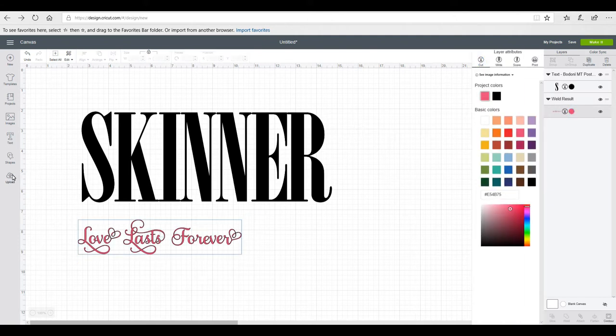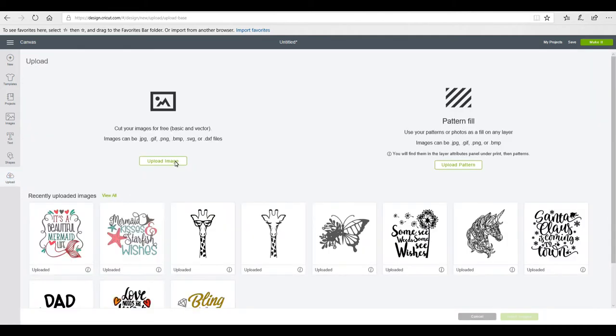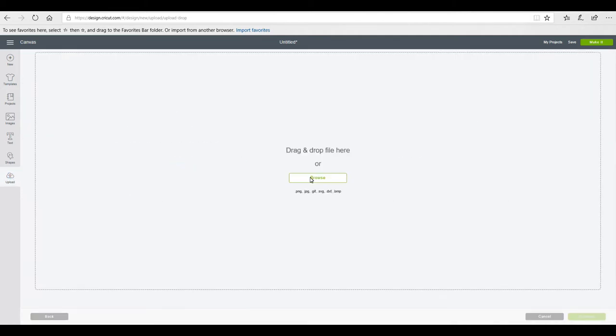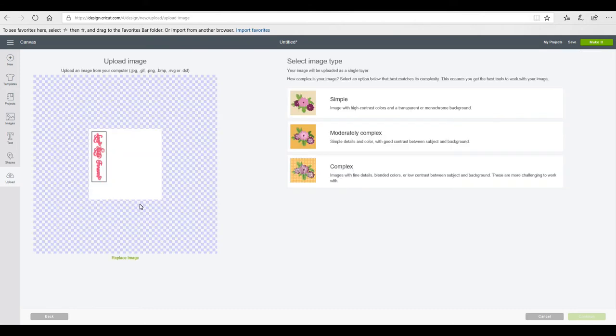I'm then going to right click and save my picture. I can then put this back to a cut image and I can then go to upload and upload image. I can go to browse, I can find my picture and I can then upload it.